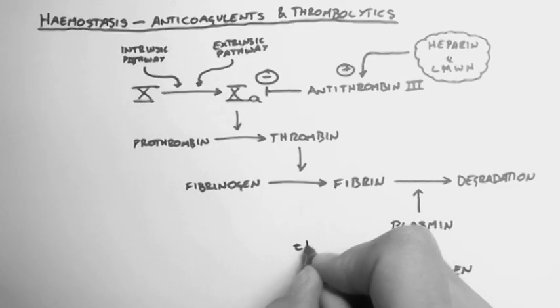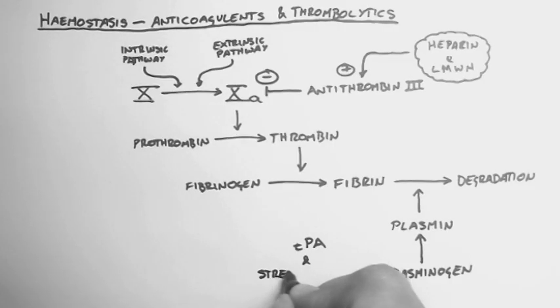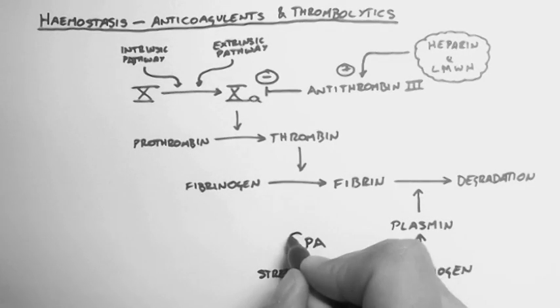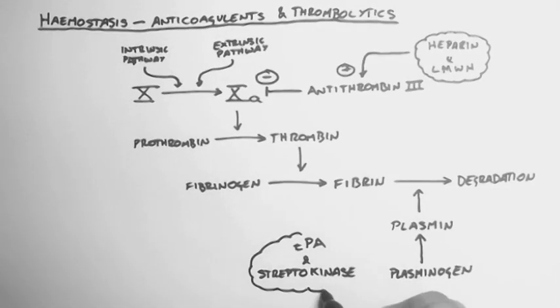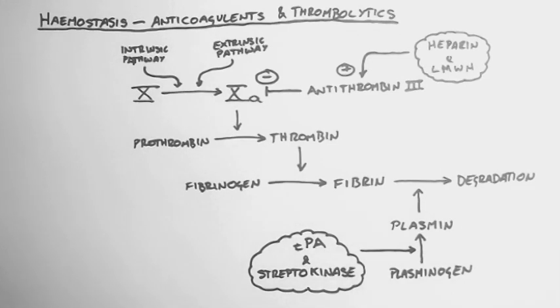If a thrombus is formed, we can use the drugs tissue plasminogen activator, or TPA, or streptokinase, which are drugs which activate the conversion of plasminogen into plasmin.